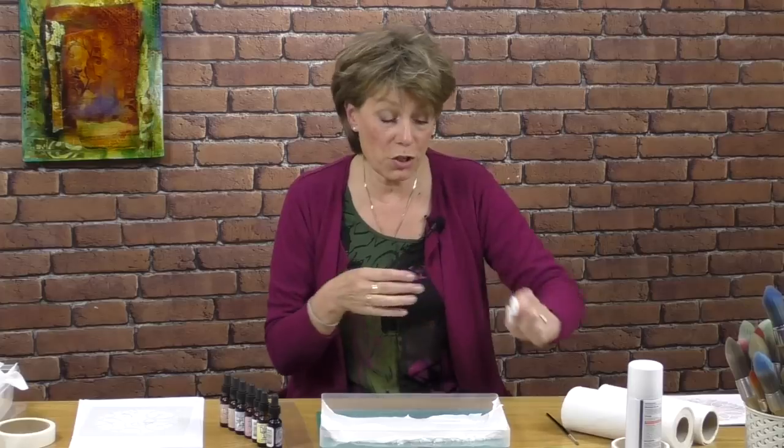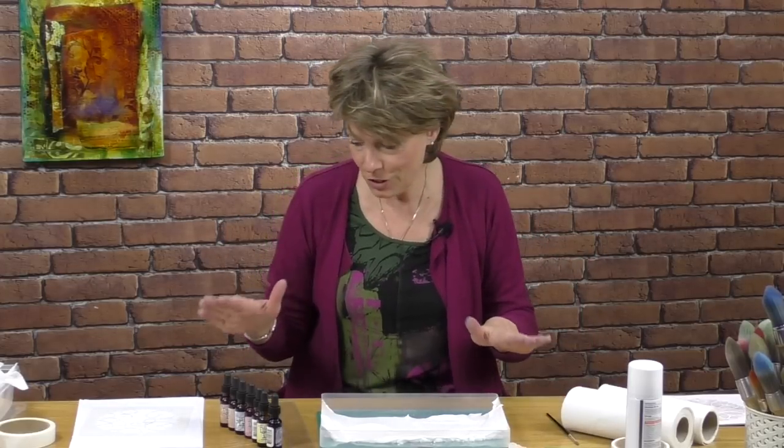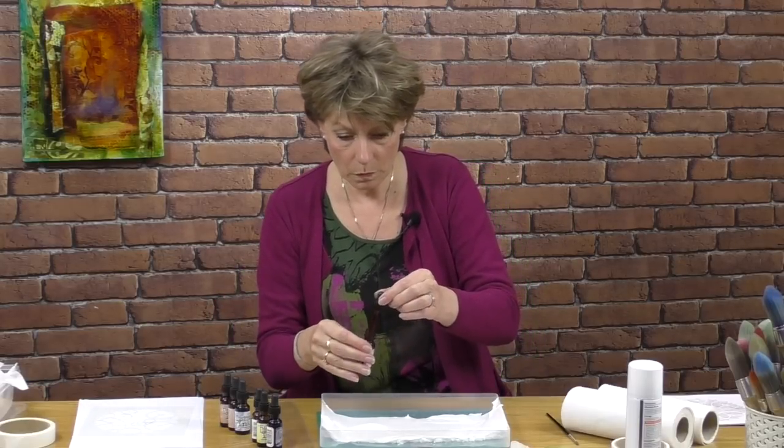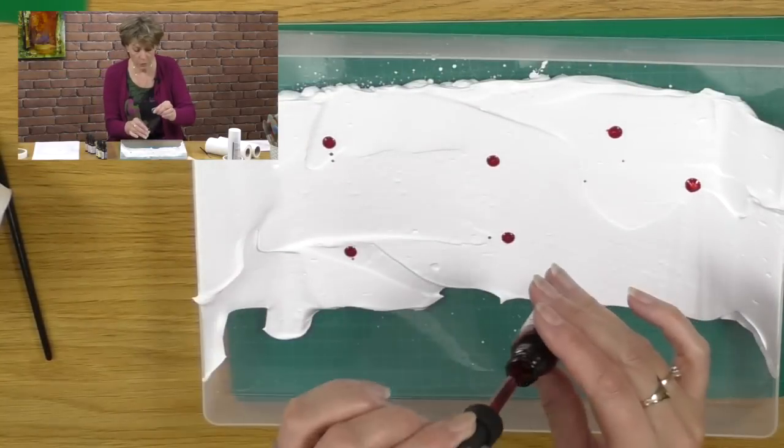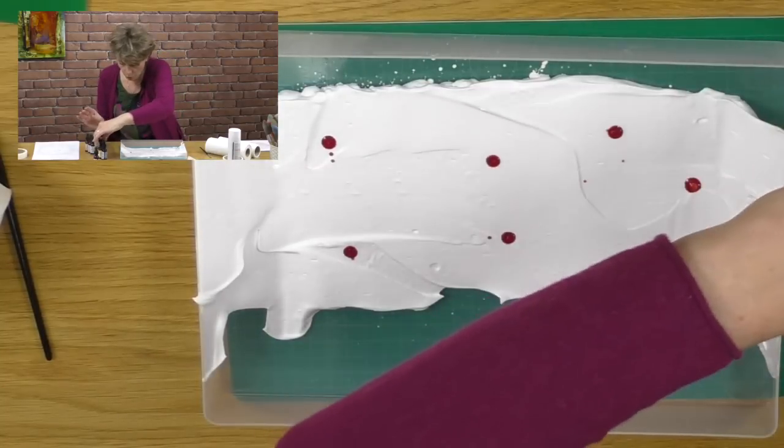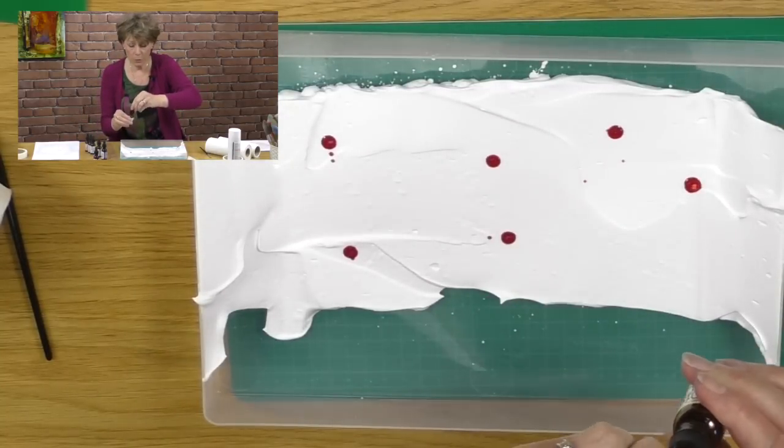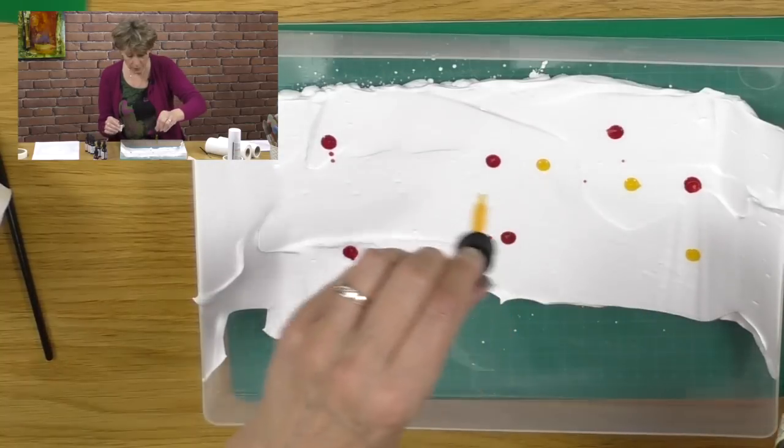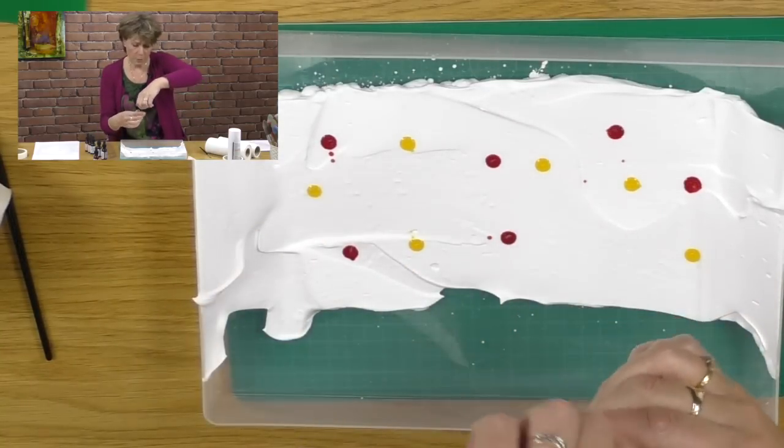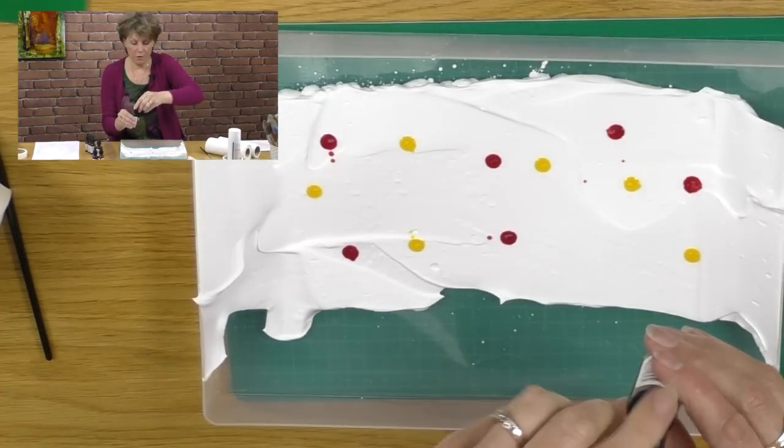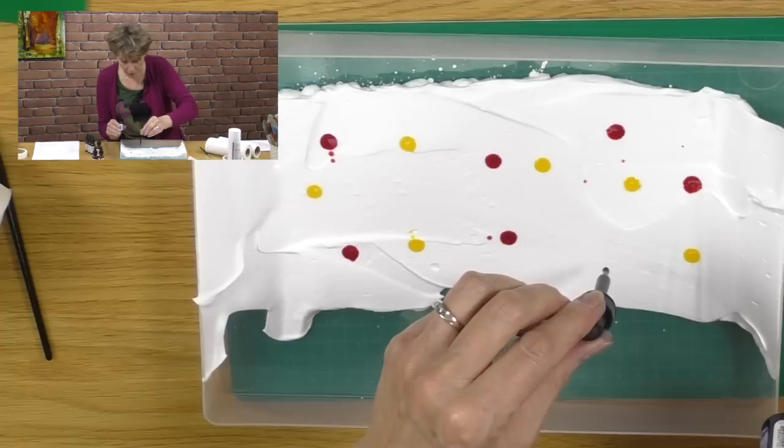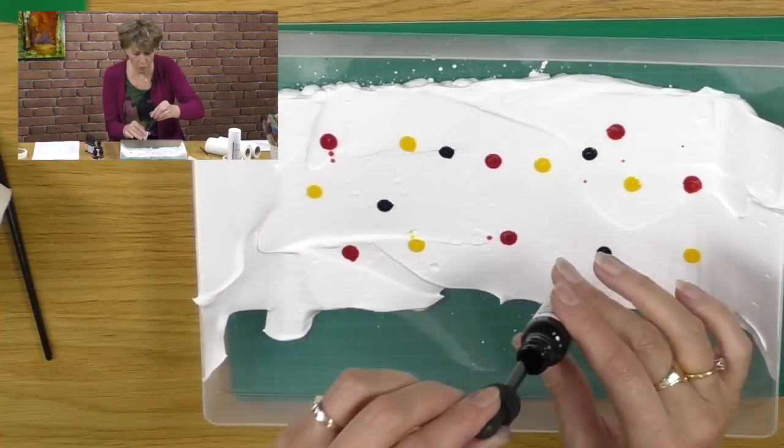What I want to show you today is just my way. It's not the way, it's just my way. So I've spread out this shaving foam and then I'm going to take some of these distress re-inkers, which are great. And I'll just add a couple of drops on the shaving foam. So I'm using worn lipstick. There's no rhyme or reason to what I'm going to use here. I really don't have a plan, but I just want to show you how it works. I've used a little bit of squeezed lemon. Let's get a dark color going. Chipped sapphire. Very dramatic. A bit of chipped sapphire. I might have to go a little bit easier on the chipped sapphire because it's a really dark blue.